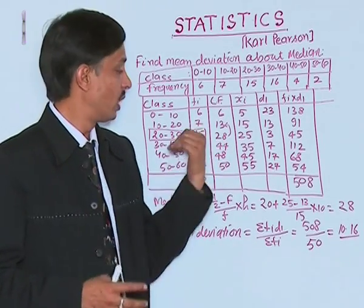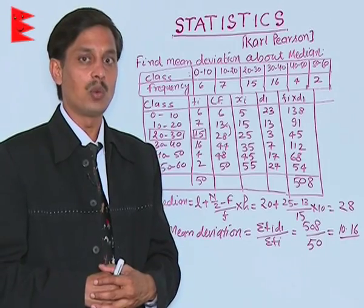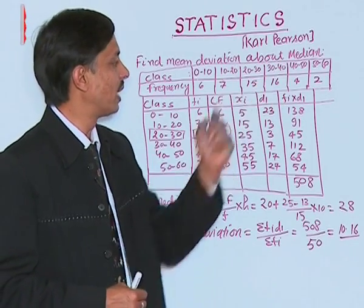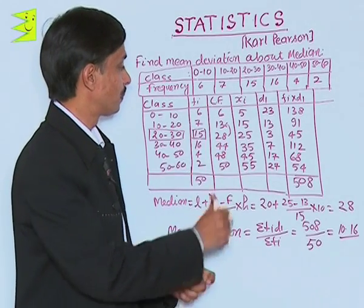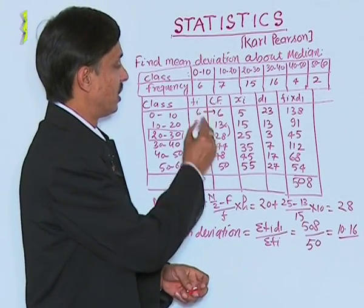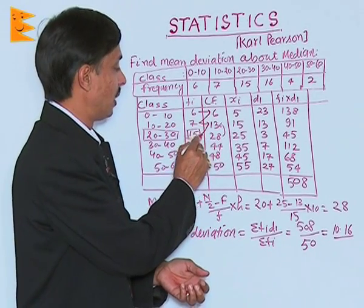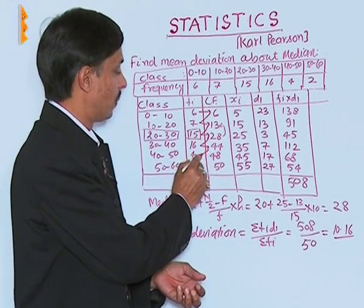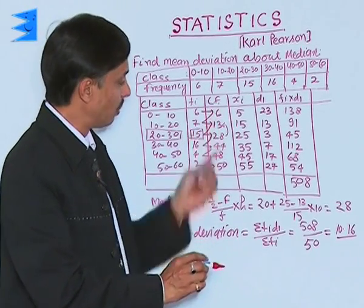As frequencies are given, mean deviation about median is required. So median will be calculated. We will calculate the cumulative frequency. It is 6 as it is, then 6 plus 7 is 13, plus 15 is 28, plus 16 is 44, plus 4 is 48, plus 2 is 50.